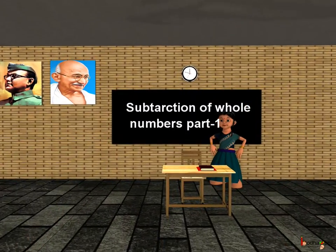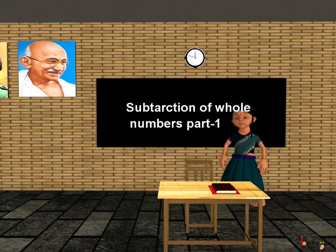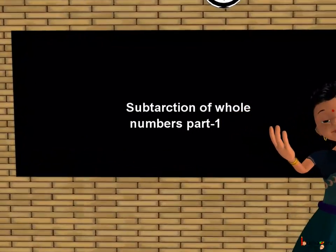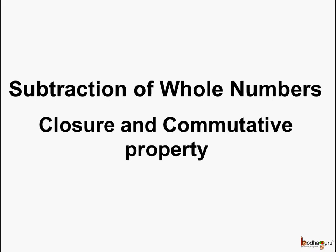Good morning children. Now let us see properties related to subtraction of whole numbers. First we will see closure and commutative property.